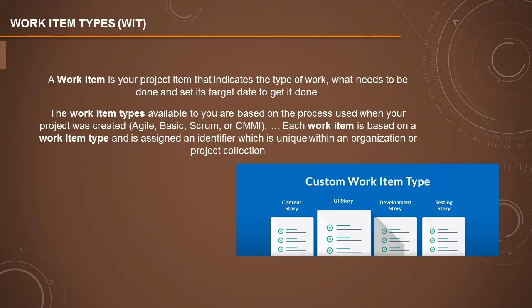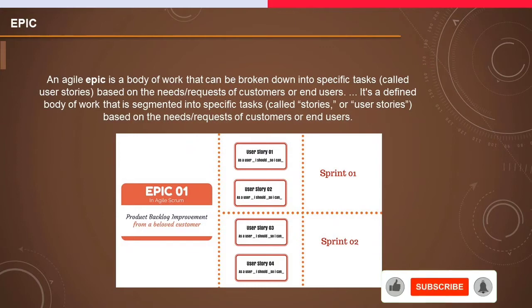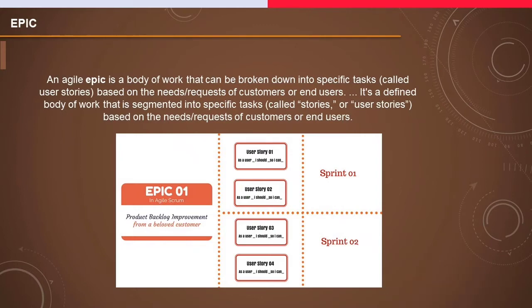We are covering some of the generic types of work item types in this tutorial. The first and foremost is an epic. An agile epic is a body of work that can be broken down into simplified tasks called user stories, based on the needs or requests of the customer or end user. It's a defined body of work segmented into specific tasks called stories or user stories based on the needs and requests of the customer and end users.